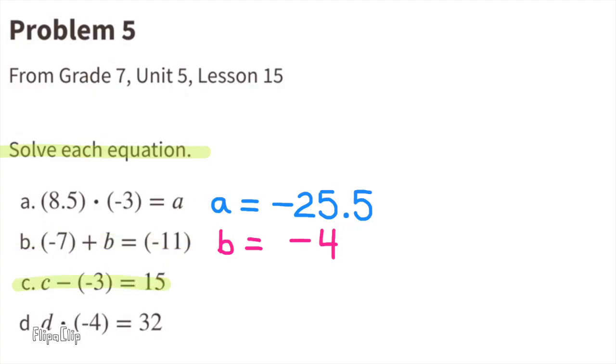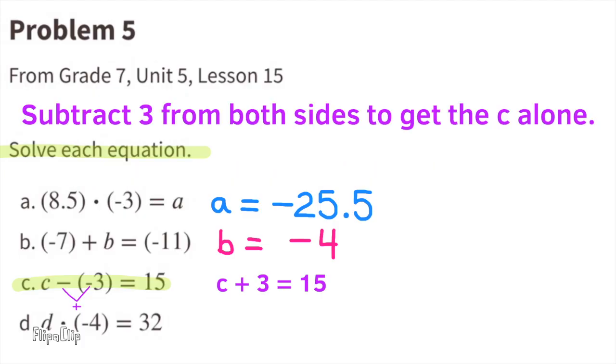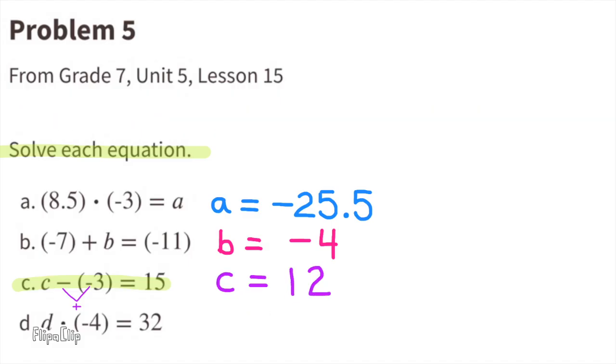C: C minus a negative 3 equals 15. Well, minus a negative is the same thing as adding a positive. So C minus a negative 3 equals 15 really means C plus 3 equals 15. Now we need to subtract 3 from both sides to get the C by itself. 3 minus 3 is 0, so those cancel each other out, and 15 minus 3 is 12. C equals 12.